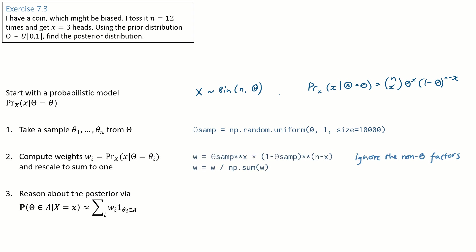Next step, compute the weights. The weight is just the likelihood function for the data and we write that out at the top. I didn't bother computing the binomial coefficient at the front because we're going to rescale the weights to make them sum to one and so any non-theta factors will just cancel out.